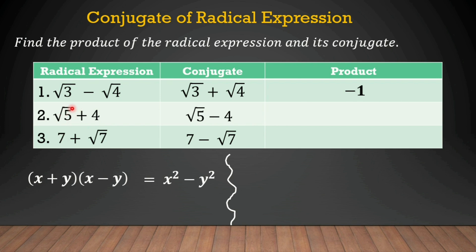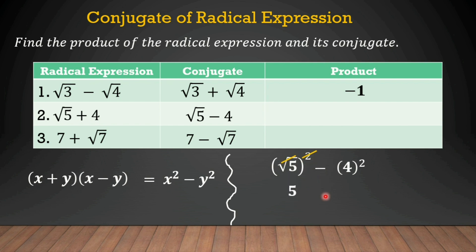For number 2 expression, we take the square of the first term: the square root of 5 squared. Then positive times negative equals negative. Then the square of the last term: 4 squared. To simplify, we divide the exponent by the index and cancel, leaving 5. Bring down the negative. Then 4 squared equals 16. So 5 minus 16 equals negative 11. The product of the second expression is negative 11.